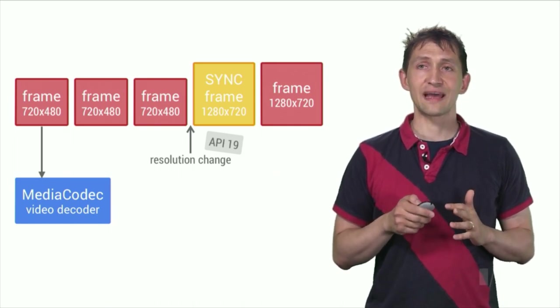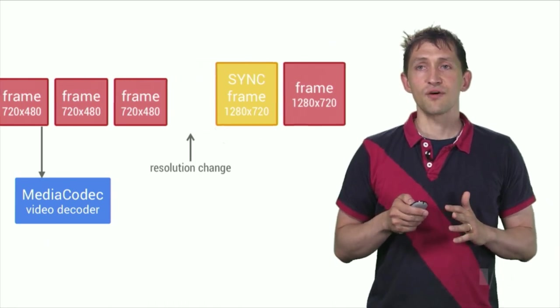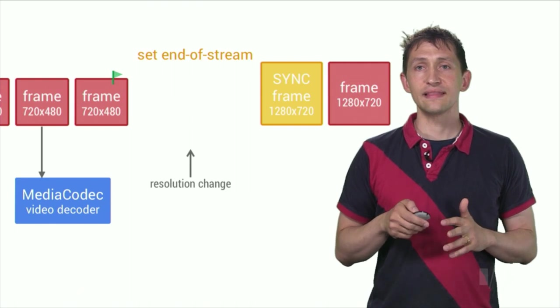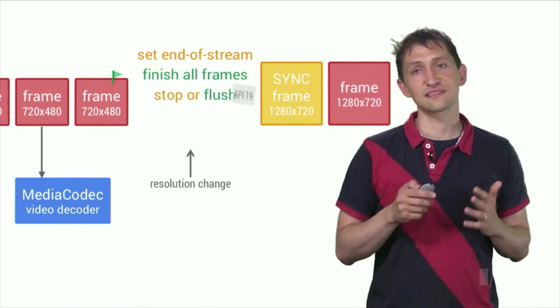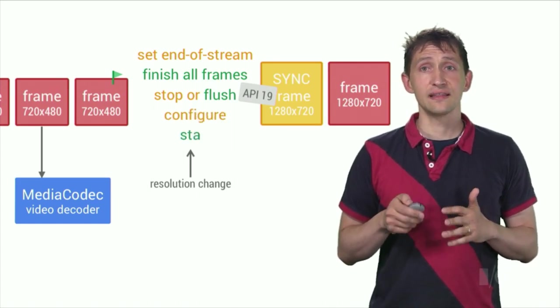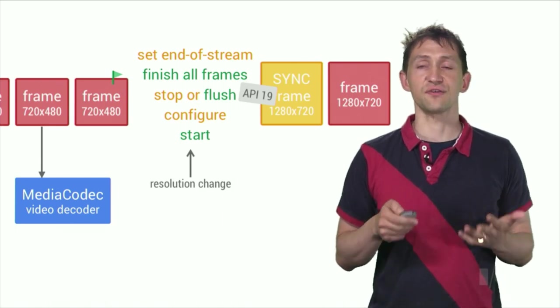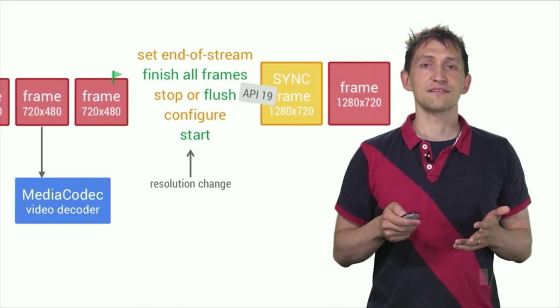If a codec does not support adaptive playback, you can still change the resolution. First, mark the last frame of the old resolution with an end of stream flag. Then wait until all frames are decoded. Then stop the codec, or simply flush it if using API level 19 or higher. Then, configure it for the new resolution. Finally, start the codec again. Wow. And I used to think that was convenient.